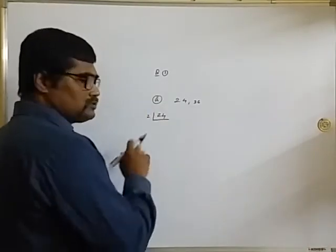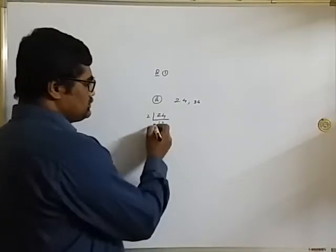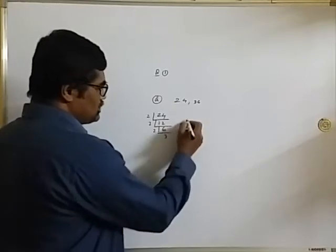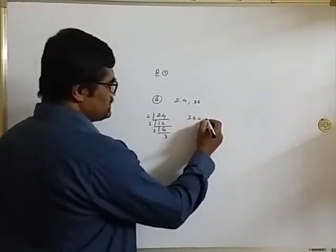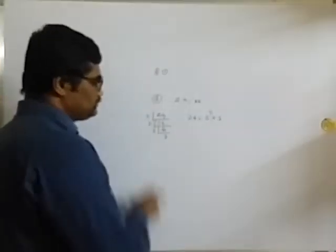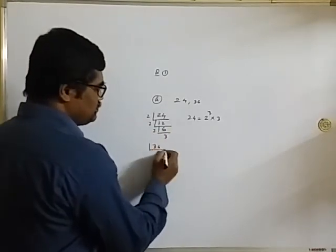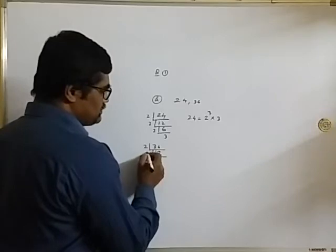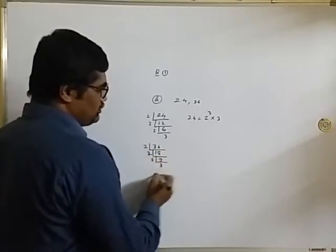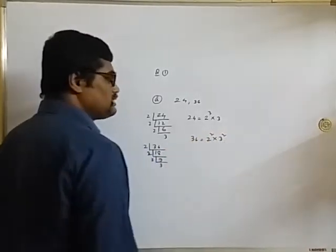Prime factorization means we will break the number as a product of prime factors. Start with 2: 2 divides 24 to give 12, and we can divide further. So 24 equals 2 cubed into 3. Now take 36: divide by 2 to get 18, then 2 to get 9, then 3 to get 3. So 36 equals 2 squared into 3 squared.